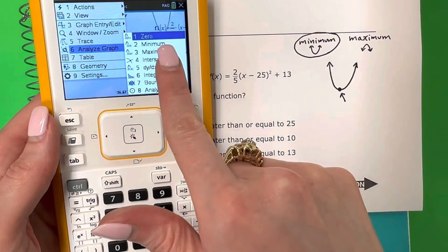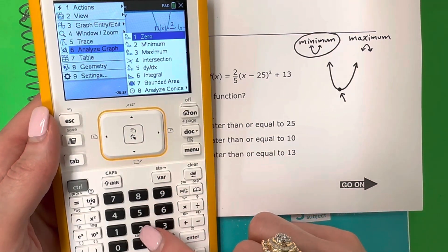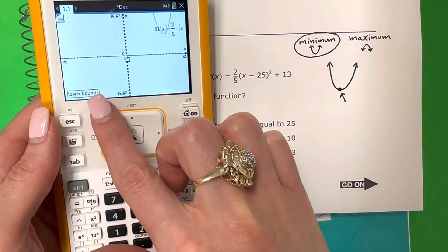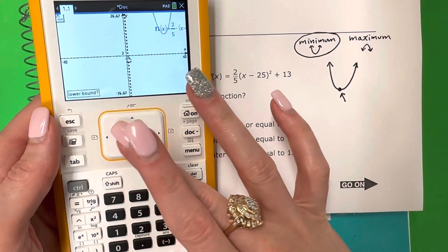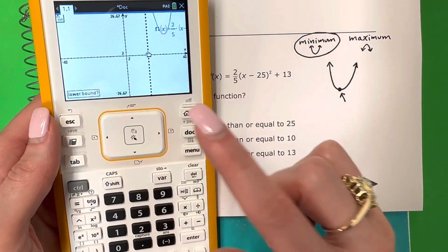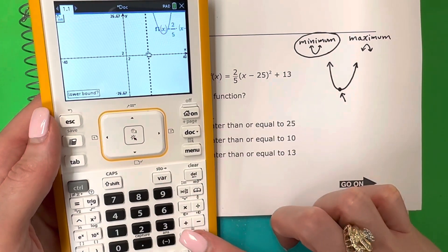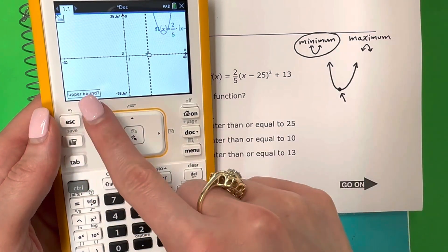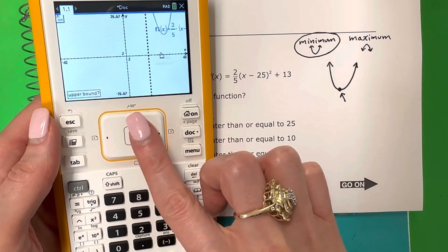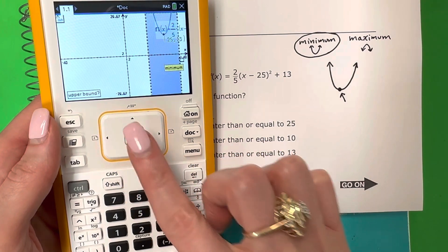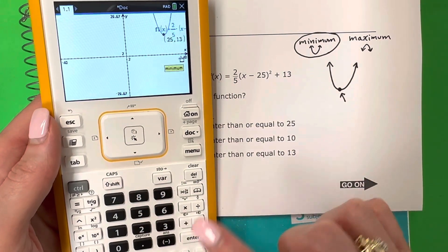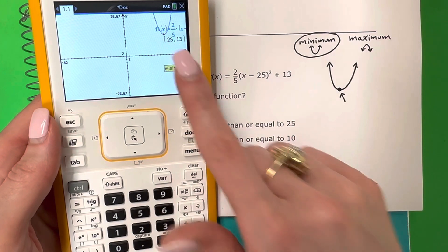So we're going to select minimum, which is the number 2. Now they said here lower bound. Lower means the smaller number, so that's going to be to the left of the graph. Go ahead and go to the left of the graph, push enter, and now they said upper. Upper means bigger, so we're going to go to the right of the graph and push enter, and there it is. That is my vertex.